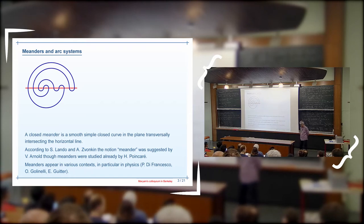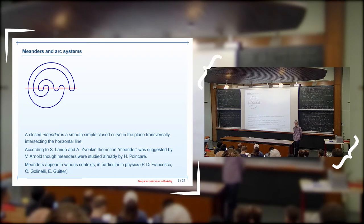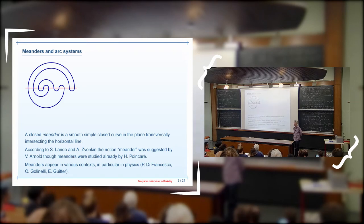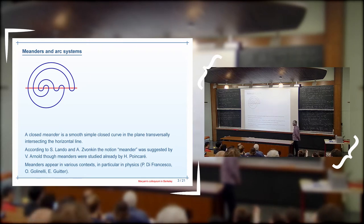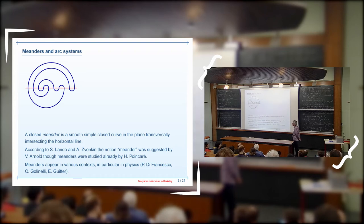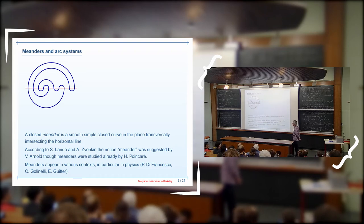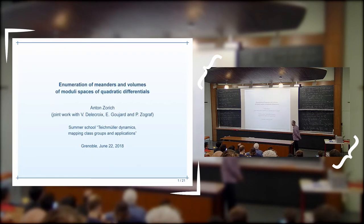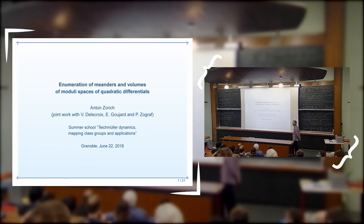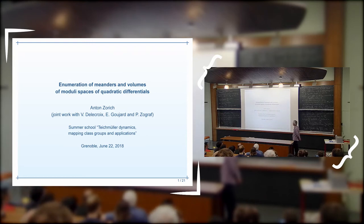One of the main problems is the counting problem: imposing a bound for the number of intersections, how many different meanders can you find up to natural equivalence? I will study this in a slightly different context, imposing extra combinatorial constraints and counting meanders under these constraints. This is joint work with Vincent Delacroix, who is here, with Elise Gouja, who will hopefully be here next week, and with Peter Zograf from St. Petersburg.